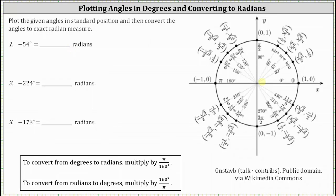The initial side is along the positive x-axis. Because the angle is negative 54 degrees, we now rotate clockwise 54 degrees. One quarter of a rotation clockwise would be negative 90 degrees, and therefore one eighth of a rotation counterclockwise would be negative 45 degrees. This indicates negative 54 degrees is a little more than one eighth of a rotation clockwise, and the terminal side would be approximately here. This is negative 54 degrees in standard position.